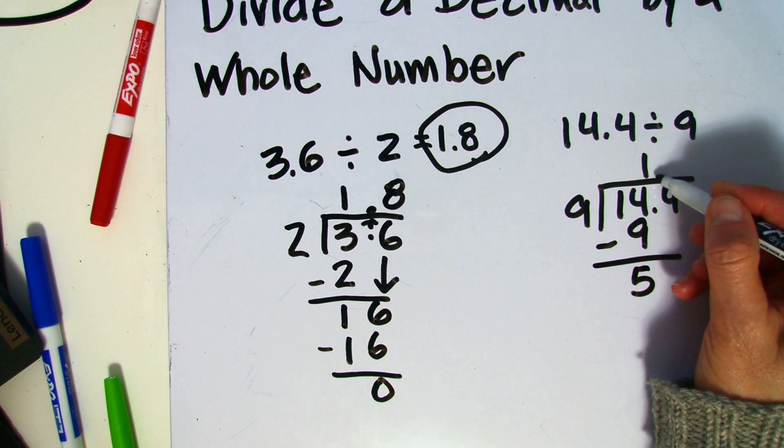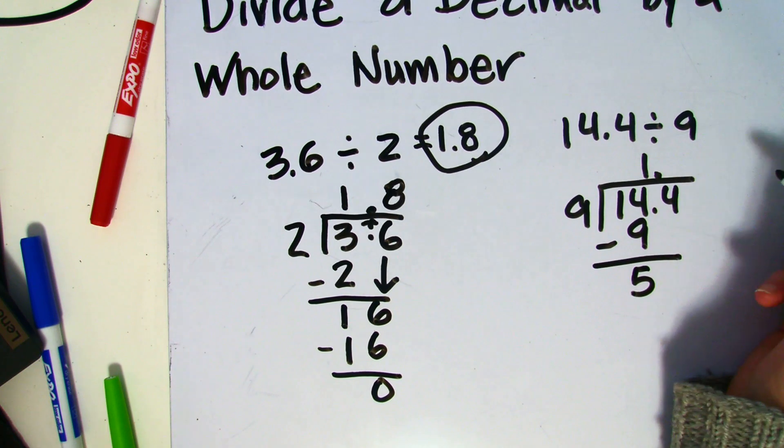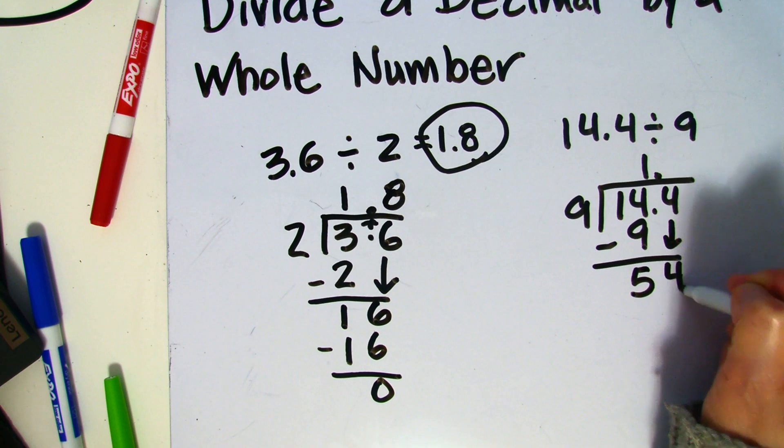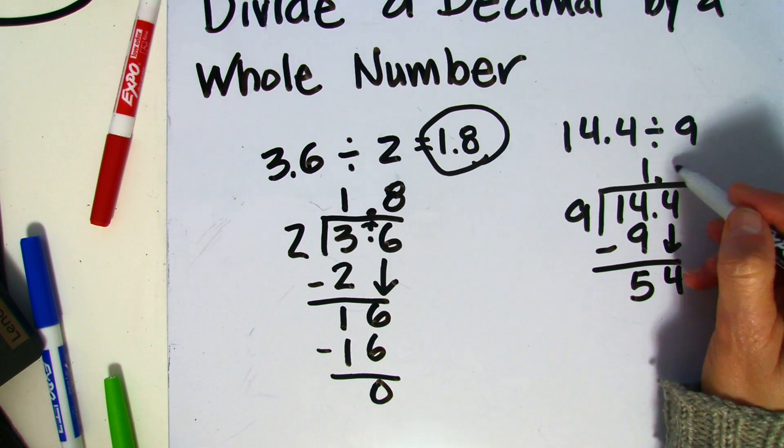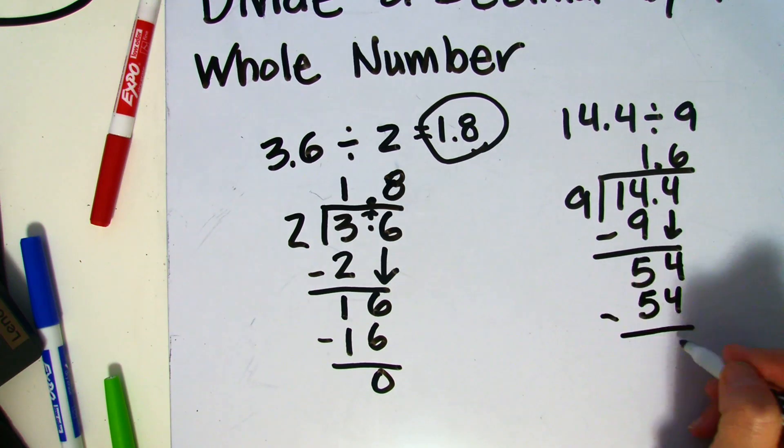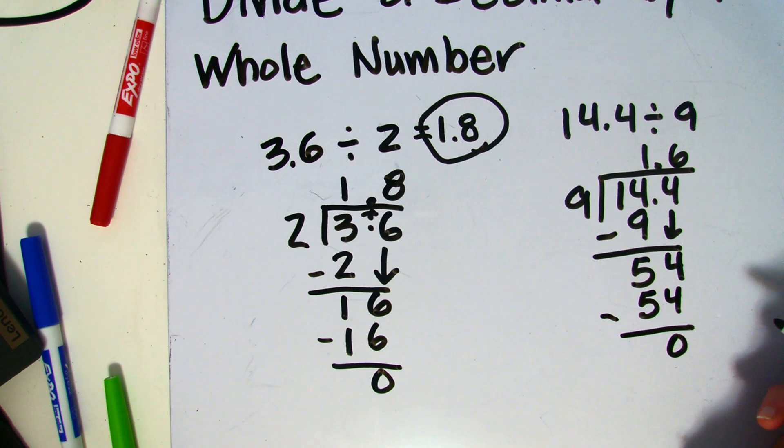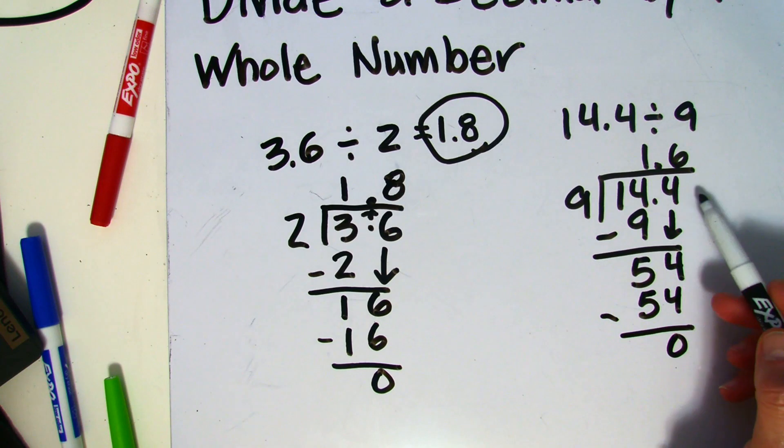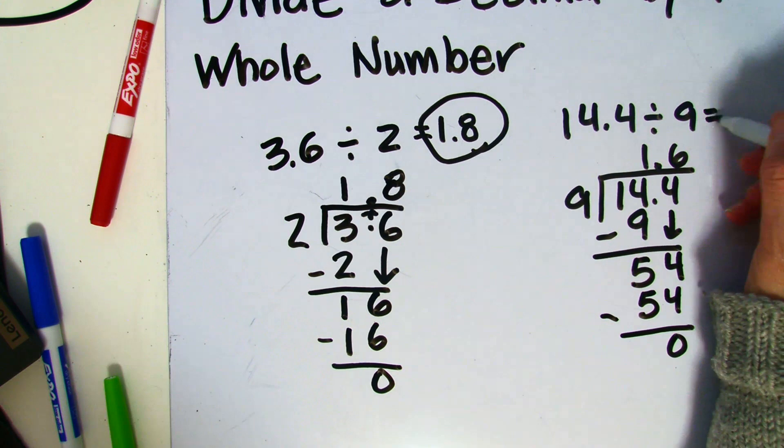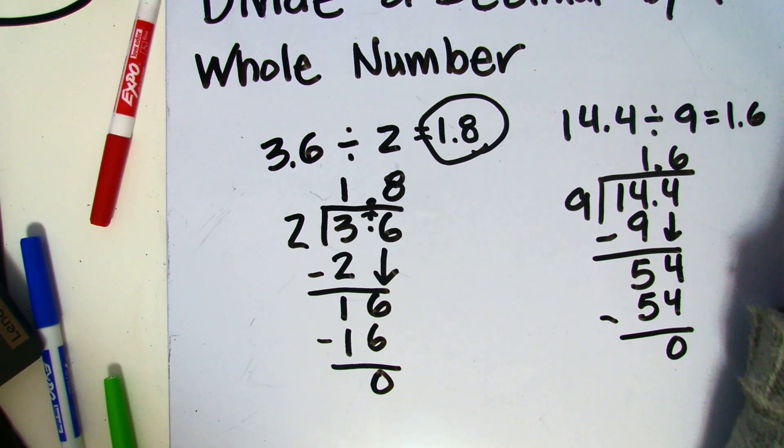Looks like I needed to move that decimal point up. Bring down the 4. 9 times 6 will give me 54. Again, I came to 0, and there are no other digits to work out or bring down. So my answer is 1 and 6 tenths.